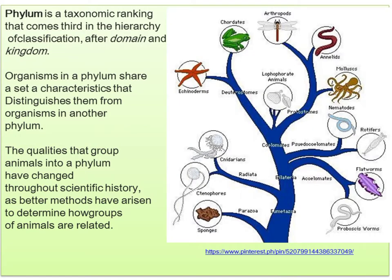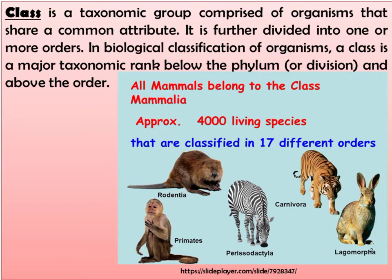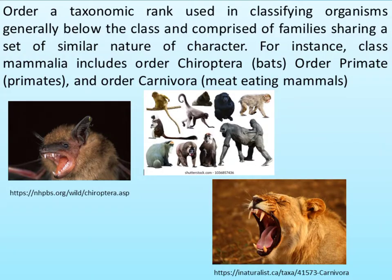Phylum is a taxonomic ranking that comes third in the hierarchy, after domain and kingdom. Organisms in a phylum share a set of characteristics that distinguishes them from organisms in another phylum. Class is a taxonomic group comprised of organisms that share a common attribute, further divided into one or more orders — ranked below the phylum and above the order. Order is a taxonomic rank used in classifying organisms, generally below class and comprised of families sharing similar characteristics. For instance, class Mammalia includes order Chiroptera (bats), order Primates, and order Carnivora (meat-eating mammals).